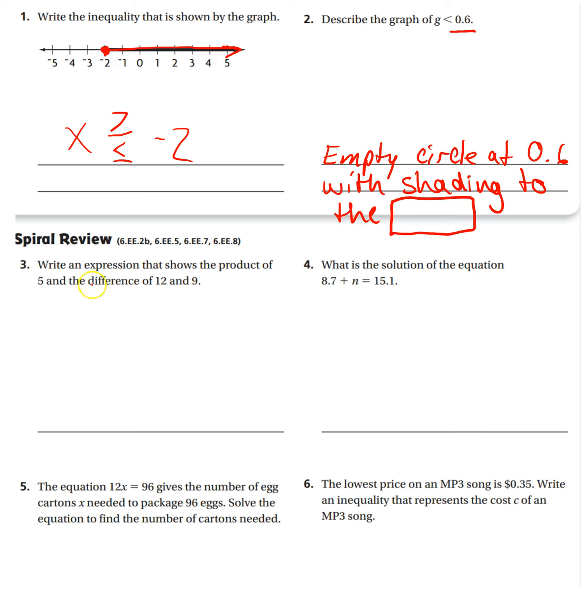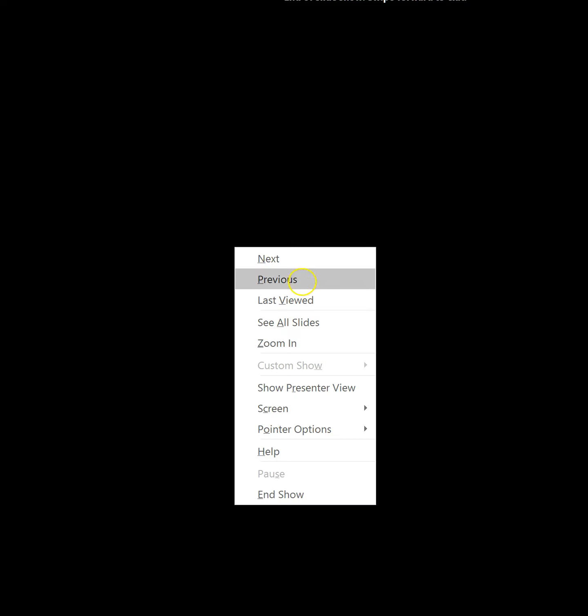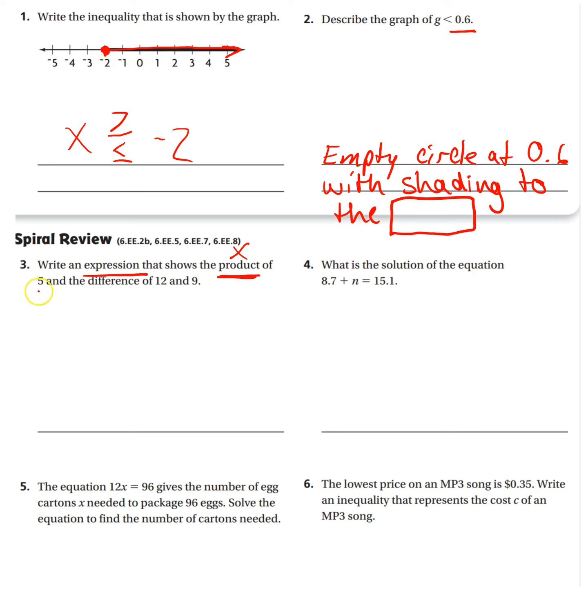Number three, write an expression, so no equal sign, that shows the product, so I'm going to be multiplying, of five, and the difference, so I'm going to have subtraction of 12 and nine.